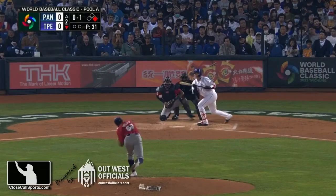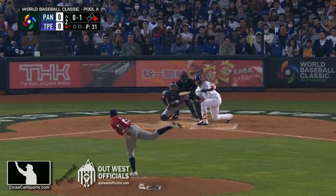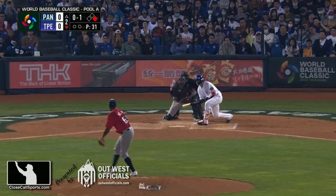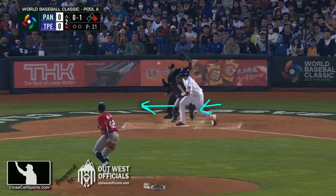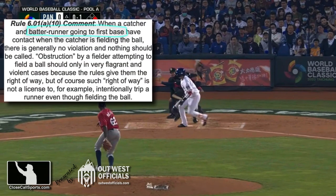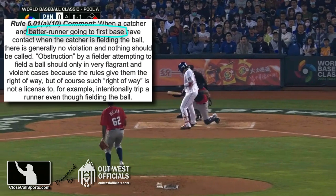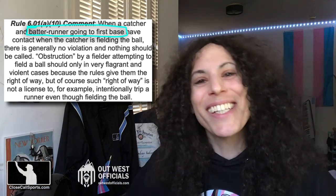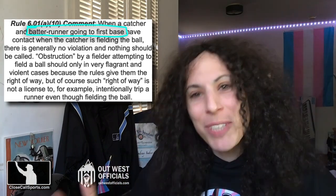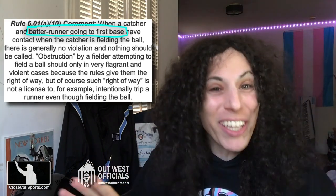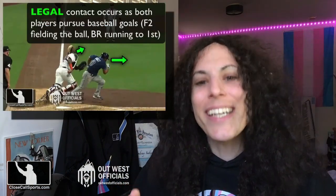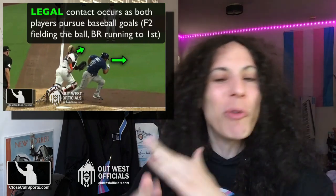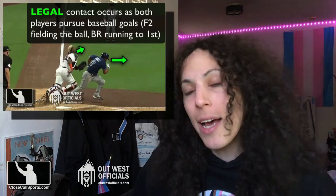Just to summarize: the key element on the tangle-untangle is that the batter is moving toward first — that's why the batter is protected. Obviously not carte blanche protection from all interference, but protected in the sense that he can get a tangle no-call out of this.